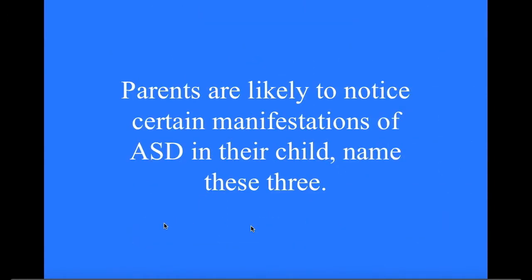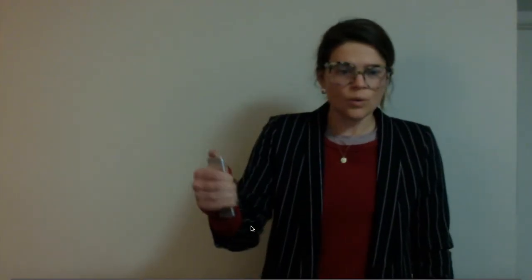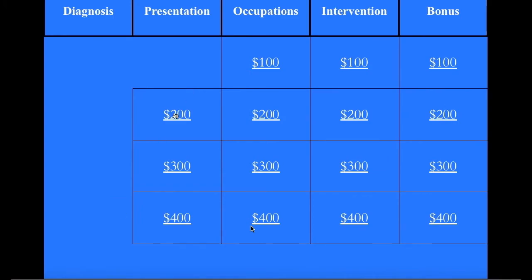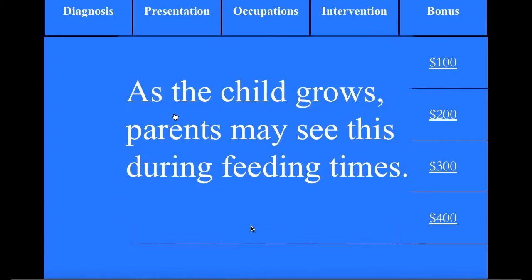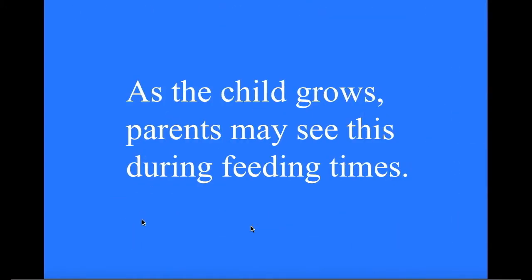Presentation for 100: Parents are likely to notice certain manifestations of ASD in their child — name these three. What is delayed language, lack of eye contact or tracking, and lack of interest in parents or typical play?